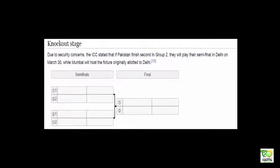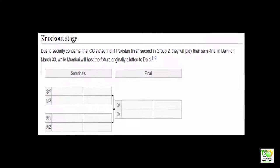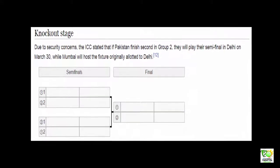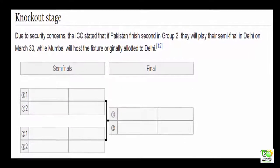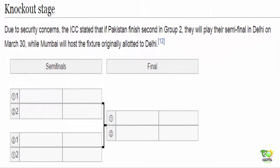Regarding the Knockout stage, due to security concerns, the ICC stated that if Pakistan finish second in Group 2, they will play their semi-final in Delhi on March 30, while Mumbai will host the other semi-final.